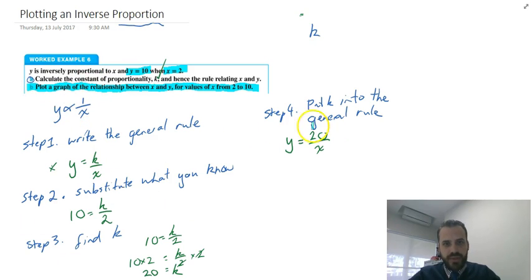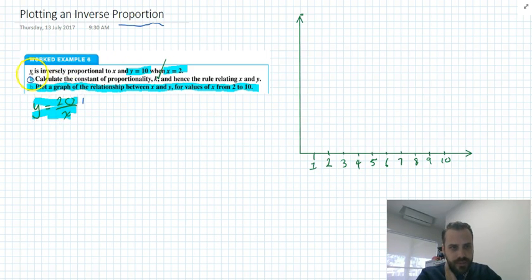I'm going to get rid of all of this mess, and all we're going to keep is this bit here, y equals 20 on x, and our question. Okay, so we're going to plot a graph of the relationship between x and y for values of x from 2 to 10. And this is the rule we're using, y equals 20 on x.